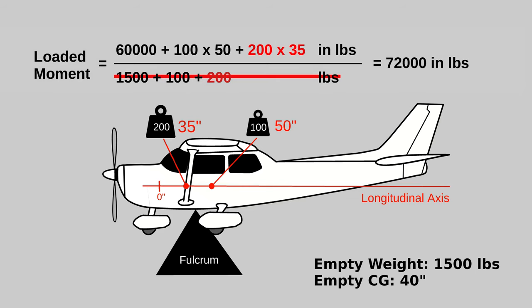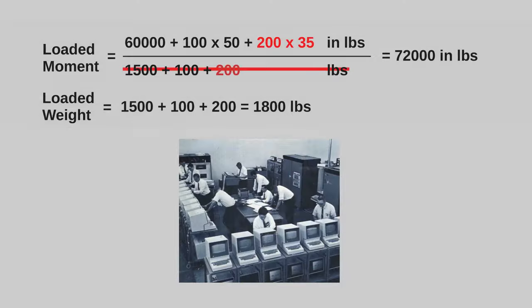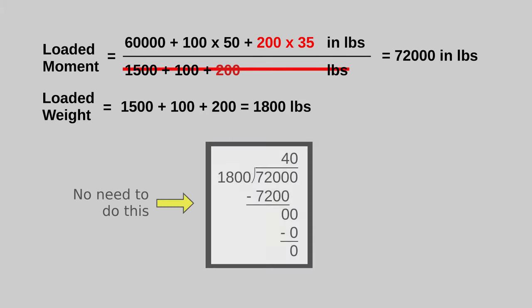When we compute the weight and balance for an aircraft, we often skip the last step of dividing by the aircraft's weight to compute the CG and just work with the loaded aircraft's moment. This is because handheld calculators weren't exactly commonplace when these aircraft were produced, and doing that last long division step manually was both error-prone and unnecessary.